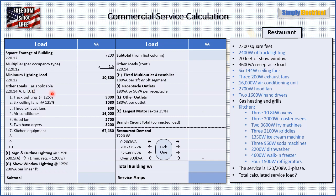I've broken this up because some of these loads have specific requirements for calculating. The first part covers sections A, B, D, and E — these are specific loads that for the most part take their full nameplate value. The exception is track lighting and ceiling fans, which have an extra 25% added because they are continuous loads, likely to be running for three hours or longer at a given time. Section A covers all specific loads not called out in F through L.